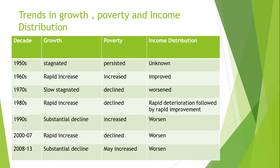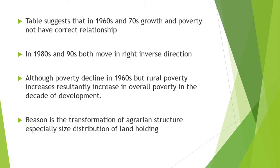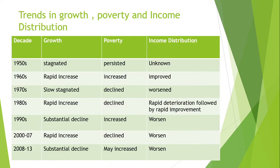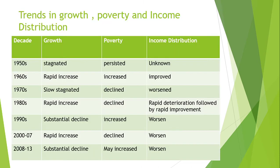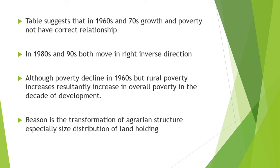This shows that when there is economic growth, poverty tends to decrease — and the distribution pattern was similar. This table suggests that in the 1960s and 1970s, growth and poverty do not have a clear relationship. In the 1960s there was rapid growth but poverty increased; in the 1970s there was slow growth but poverty declined. In the 1980s and 1990s both moved in the right direction — in the 1980s growth was rapid and poverty declining; in the 1990s growth declined but poverty was increasing.